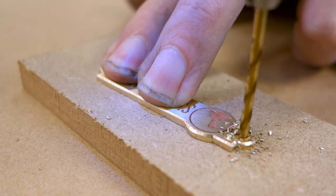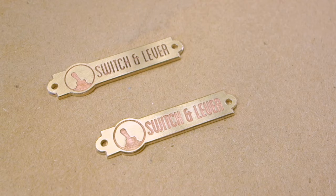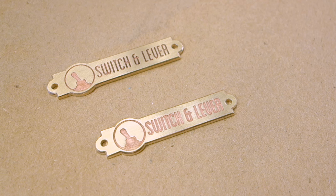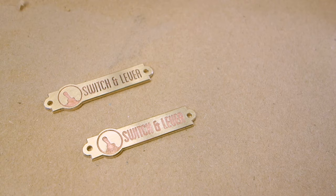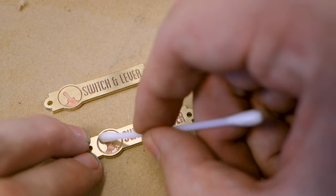The plaques look great, but they really need something a little more to pop. The etched areas should be filled with paint, and you can choose any color you really want. Before painting, do a proper prep by degreasing the plaques as well as you can using acetone or paint thinner.